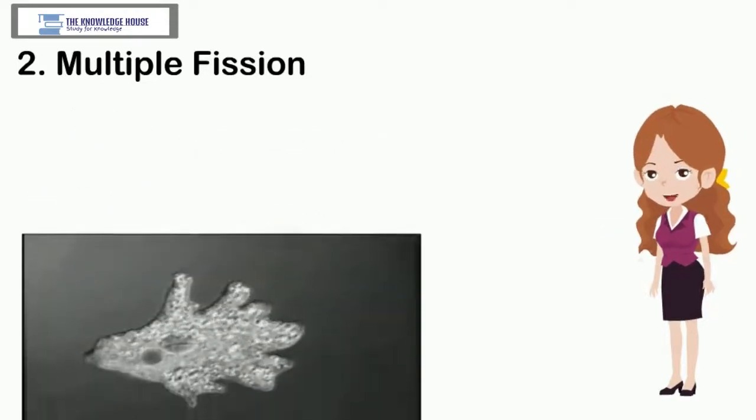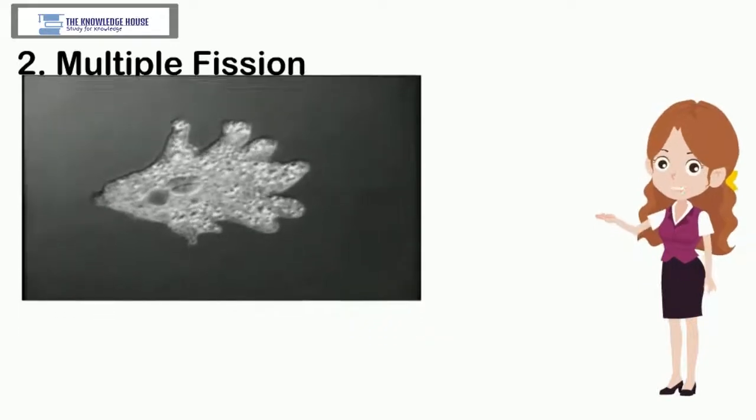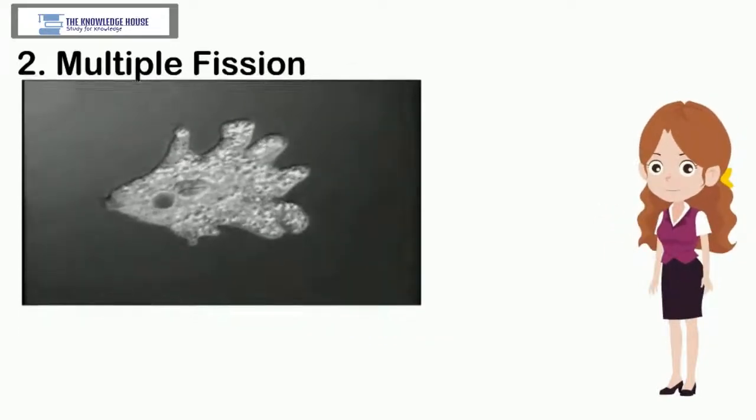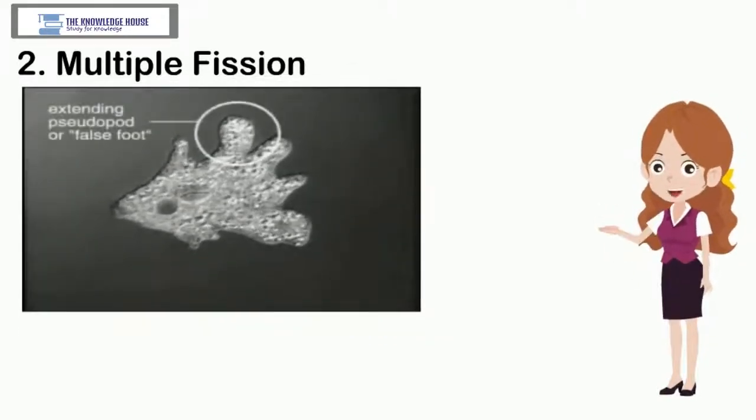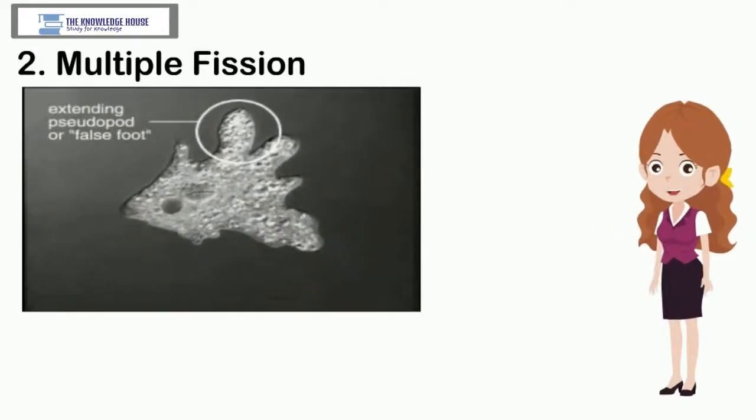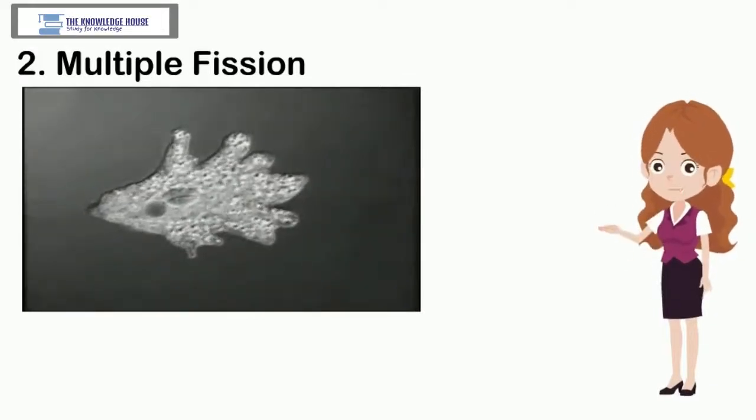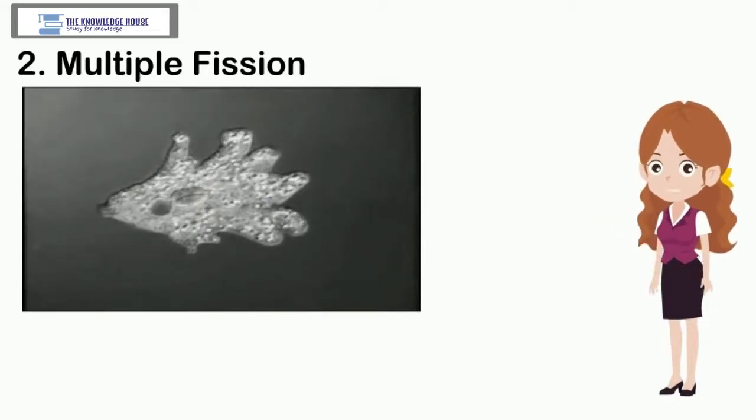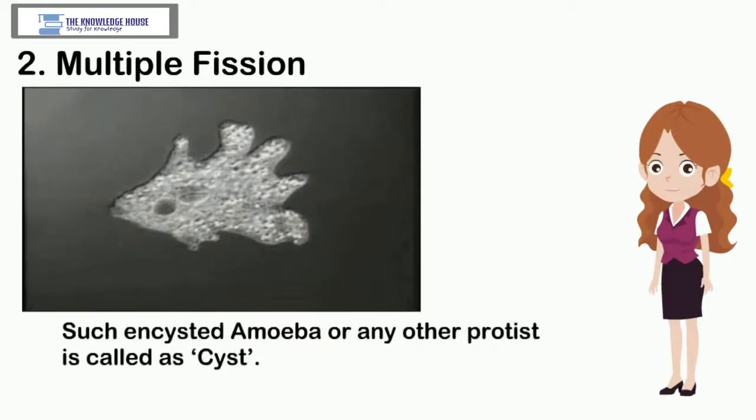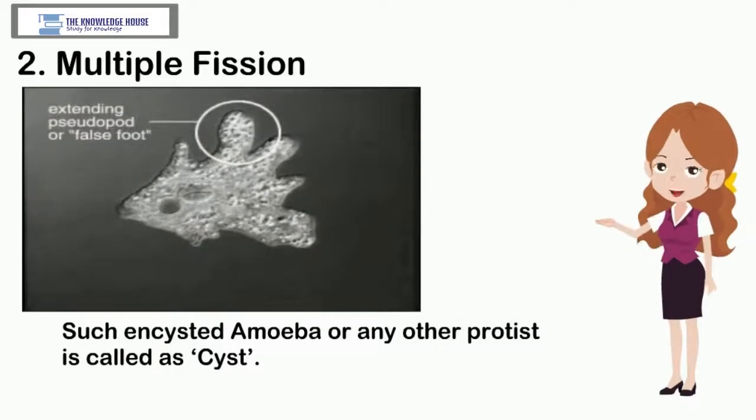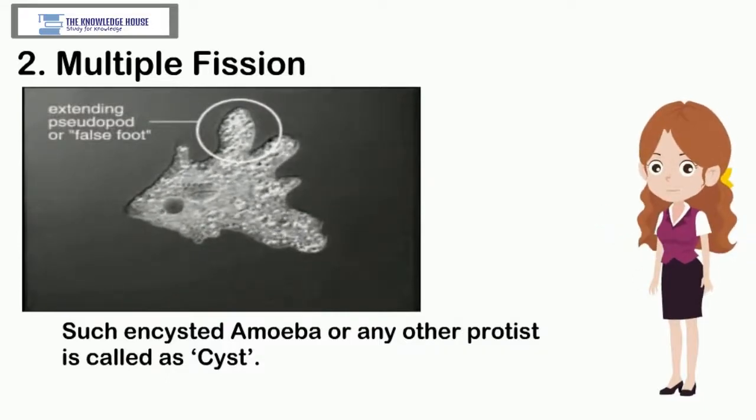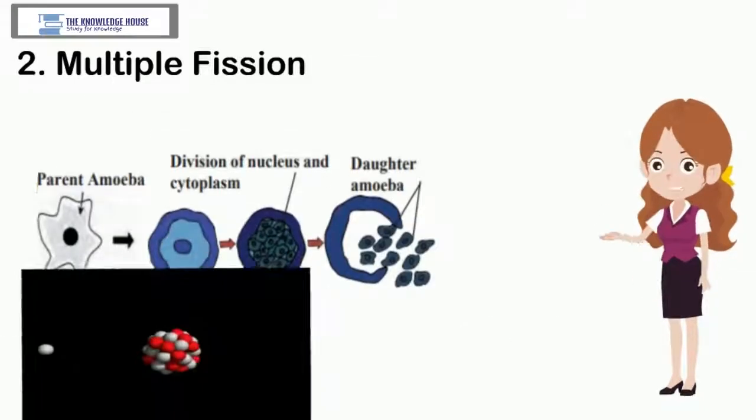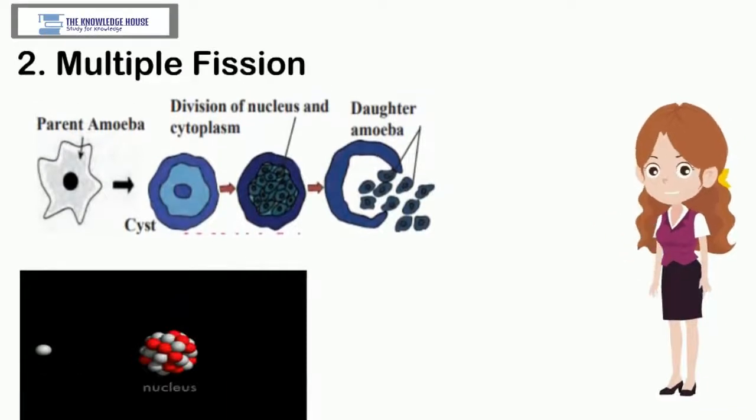Amoeba stops the formation of pseudopodia and thereby movements whenever there is lack of food or any other type of adverse condition. It becomes rounded and forms protective covering around plasma membrane. Such encysted amoeba or any other protist is called a cyst. Many nuclei are formed by repeated nuclear divisions in the cyst.